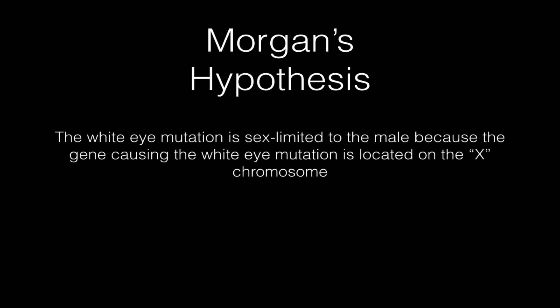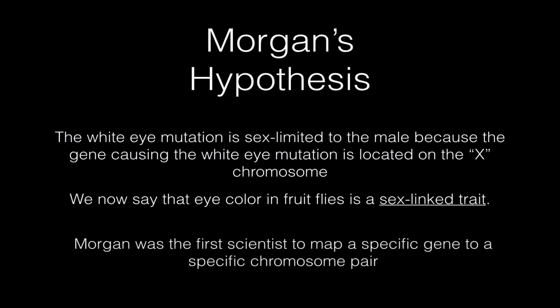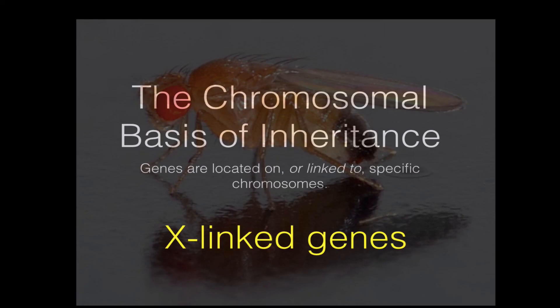So Morgan's hypothesis was that the white-eye mutation is what we call a sex-limited trait. It's limited to the male because the gene causing the white-eye mutation is located on the X chromosome. We now say that the eye color in fruit flies is a sex-linked trait. Morgan was the first scientist to map a specific gene to a specific chromosome pair. And this is important. We're going to look at X-linked genes in humans in the next videocast. Thanks for listening.